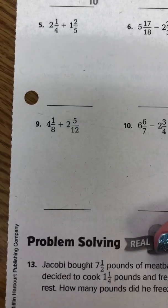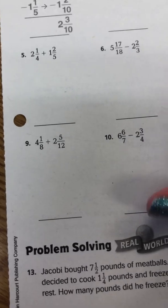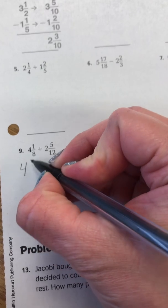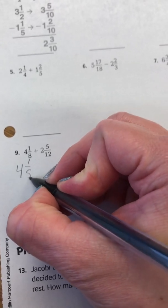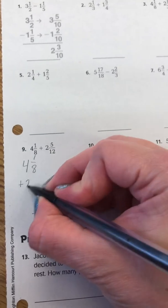Let's look at number 9: 4 and 1 eighth plus 2 and 5 twelfths. The first thing you're going to want to do is rewrite the problem. So 4 and 1 eighth plus 2 and 5 twelfths.